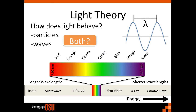Let's start the discussion of color measurements by first talking about light. Light is said to behave in two different ways: as a wave and as a particle. When I say behave, I am referring to the characteristics that dictate its function. In some cases, light behaves more like a particle, and in other cases, more like a wave. For the sake of this discussion, let's say that light behaves like a wave.